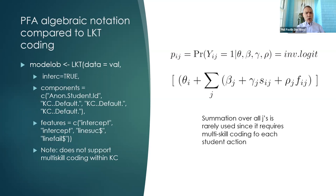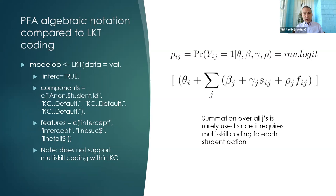The summation sign over all possible J's indicates that the full PFA model implies you could have multiple KCs involved in each performance. You would then have the difficulties of all KCs and the effects of successes for all KCs as separate summed terms. Typically this isn't used, however. Multi-skill models are an area ripe for future research — how we can create and employ them effectively is an open question.